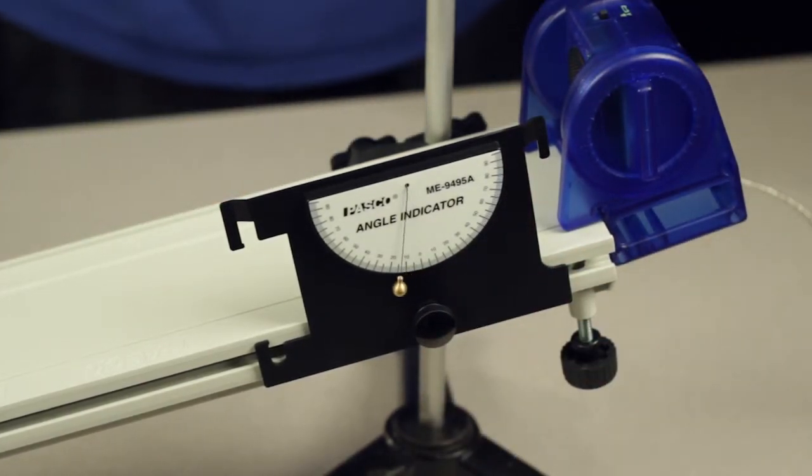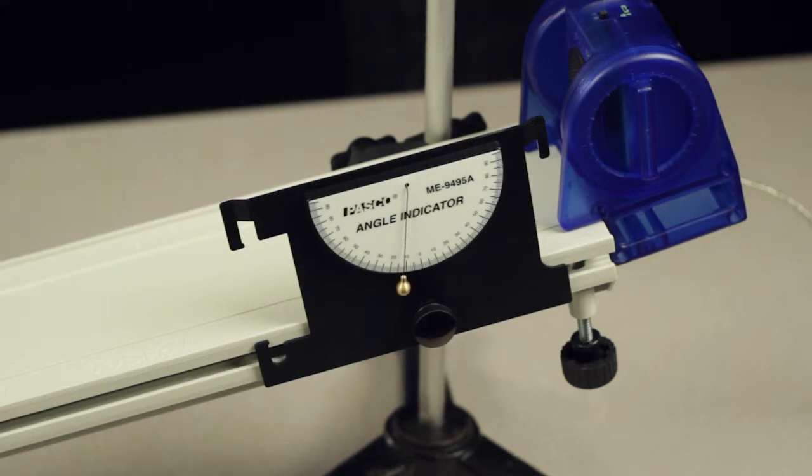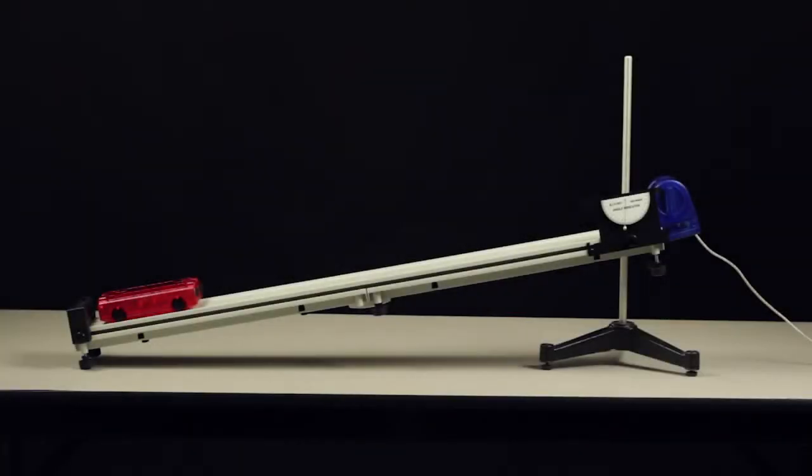When using the angle indicator with a track, it's best to mount it as close to the end of the track as possible. This will also help to prevent the indicator from interfering with measurements made by a motion sensor.